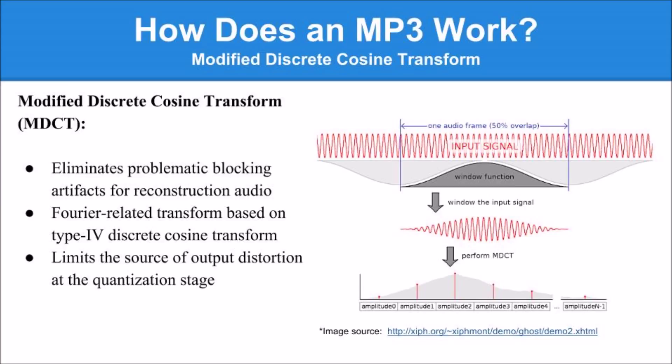Modified discrete cosine transform is used by the MP3 format to eliminate the blocking artifacts that would cause a problem during the reconstruction of an audio sample. MDCT is a Fourier-related transform based on type 4 discrete cosine transform with the additional property of being lapped.